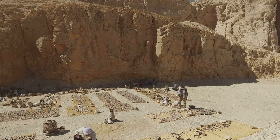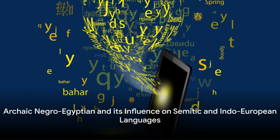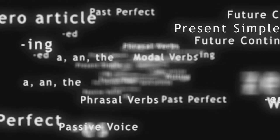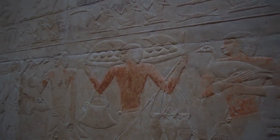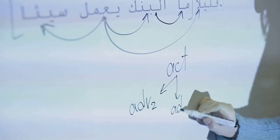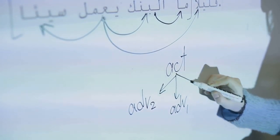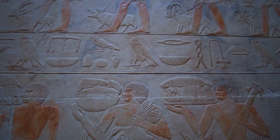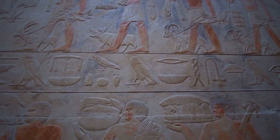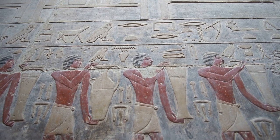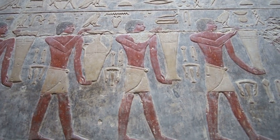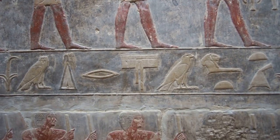Let's now look at how archaic Negro-Egyptian influenced other languages. It's one thing to evolve as a language, but it's another to influence other languages — and that's precisely what archaic Negro-Egyptian did. This ancient language didn't stop at its own evolution. It reached out, impacting other languages, specifically Semitic and Indo-European languages. The theory is that these language families, which include languages like Hebrew, Arabic, English, and German, have their roots in Africa, specifically in archaic Negro-Egyptian. These languages that span continents and cultures may have originated from the heart of Africa.